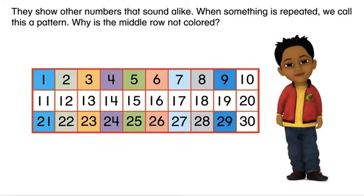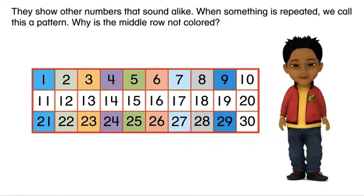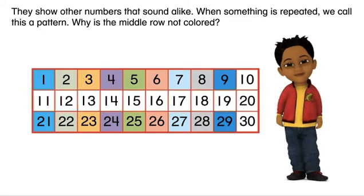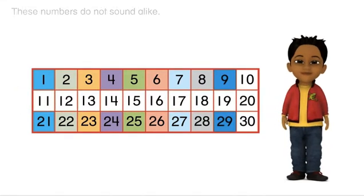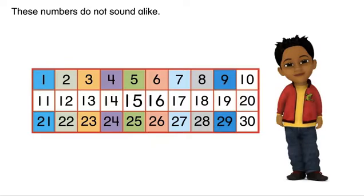When something is repeated, we call this a pattern. Why is the middle row not colored? These numbers do not sound alike.